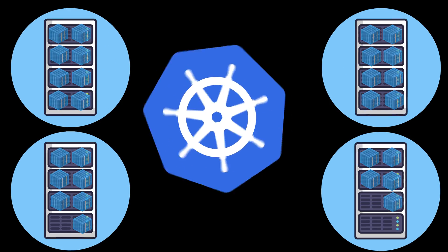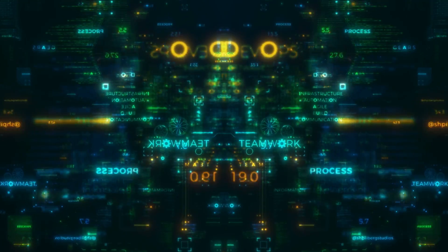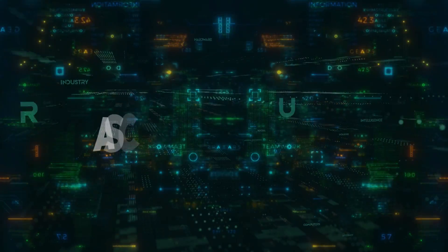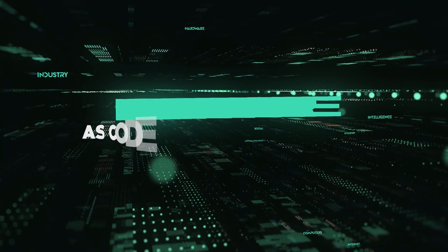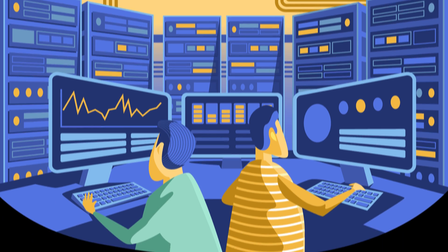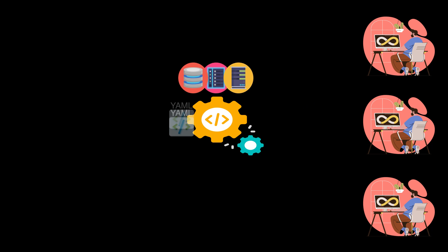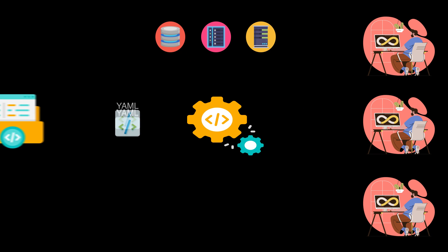The last important concept of the DevOps world you should know is infrastructure as code. Instead of manually managing infrastructure components like networks or servers, DevOps engineers write machine-readable definition files to automatically provision resources.